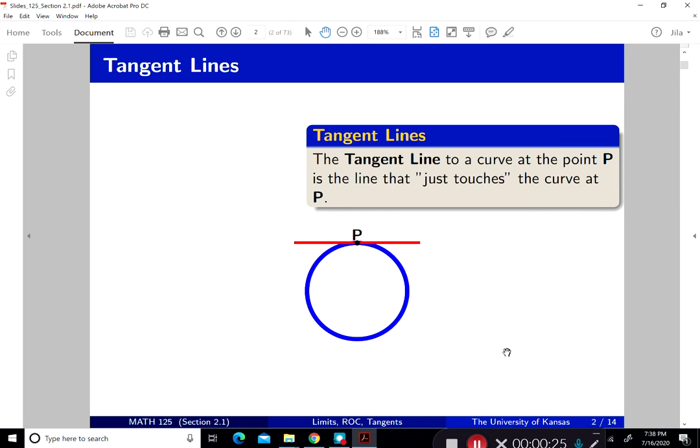So what is a tangent line? The tangent line to a curve at the point P is the line that just touches the curve locally at P. And so this is what we're so familiar with, is the circle, and here's a tangent line to circle. It depends on the point P. You get a completely different tangent line every time, basically.